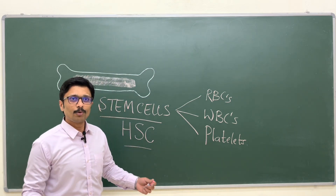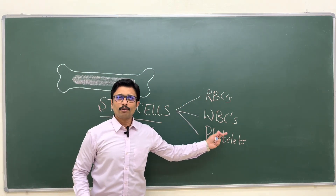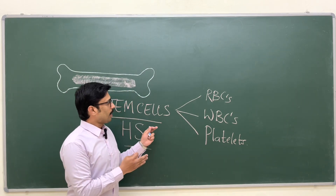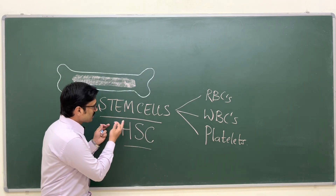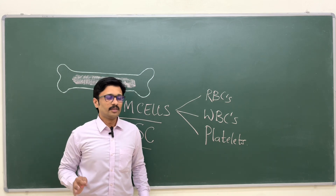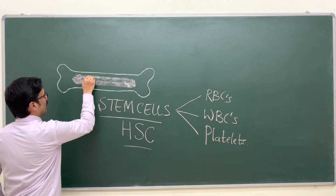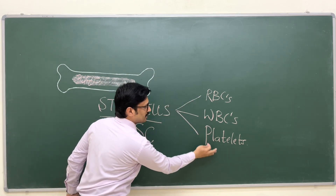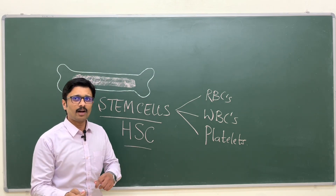These stem cells are called hemopoietic stem cells. They are multipotent or pluripotent because they can give rise to any type of blood cell — they are not committed to a particular cell type. So from the stem cells themselves, all types of blood cells arise.